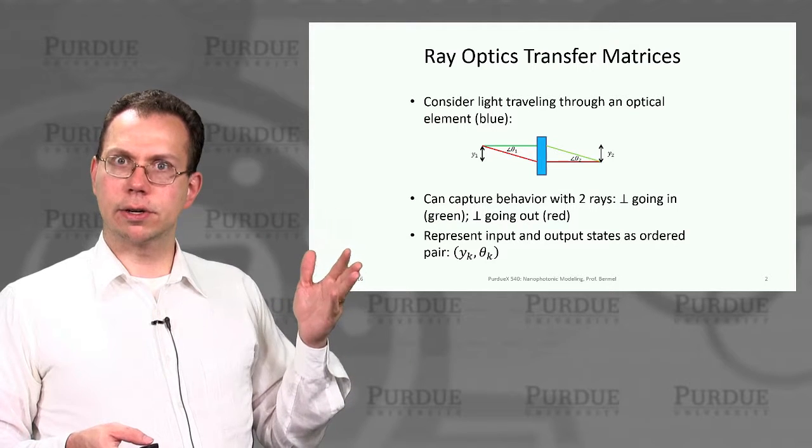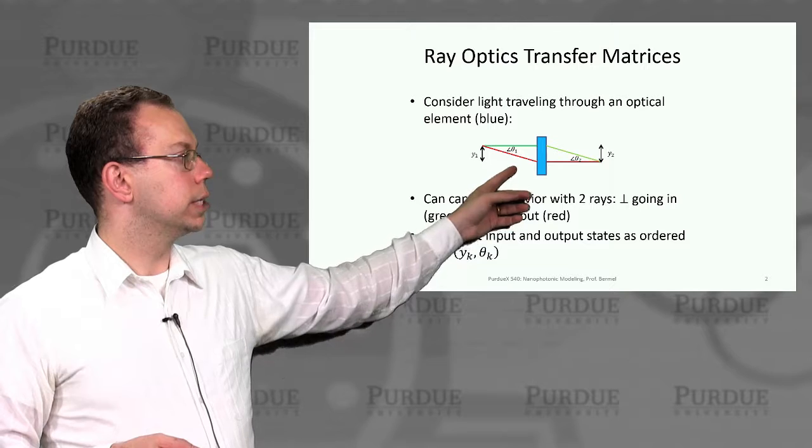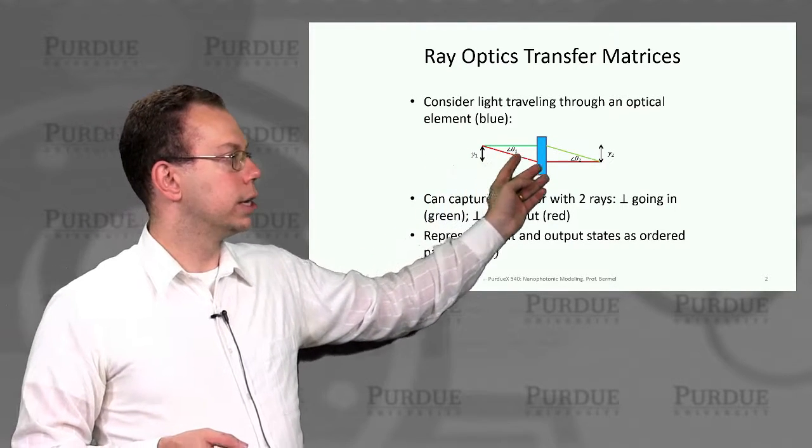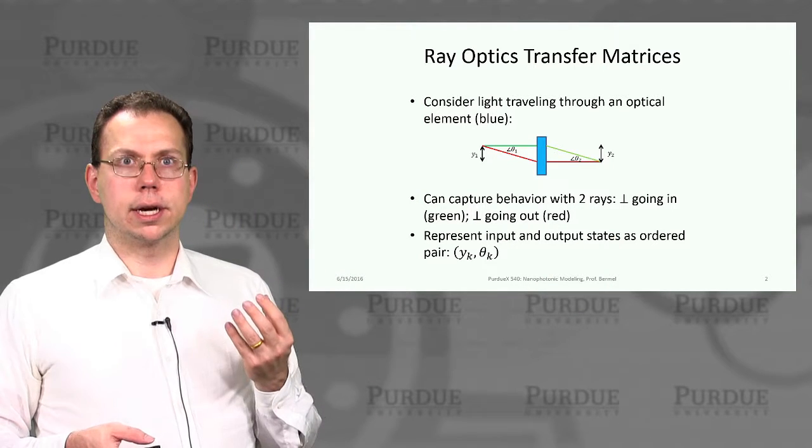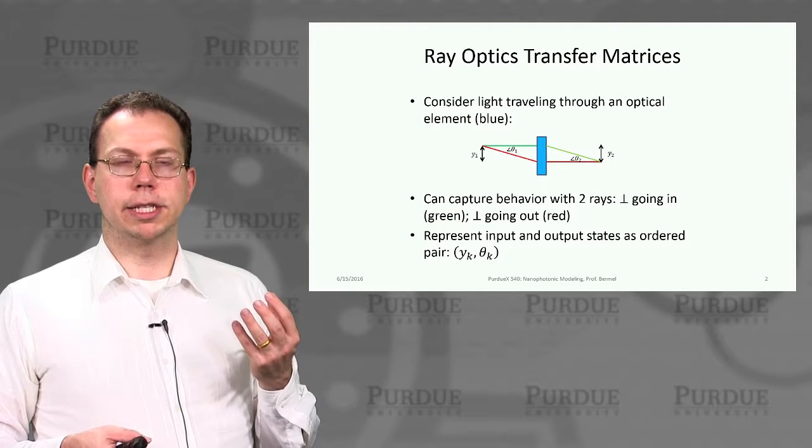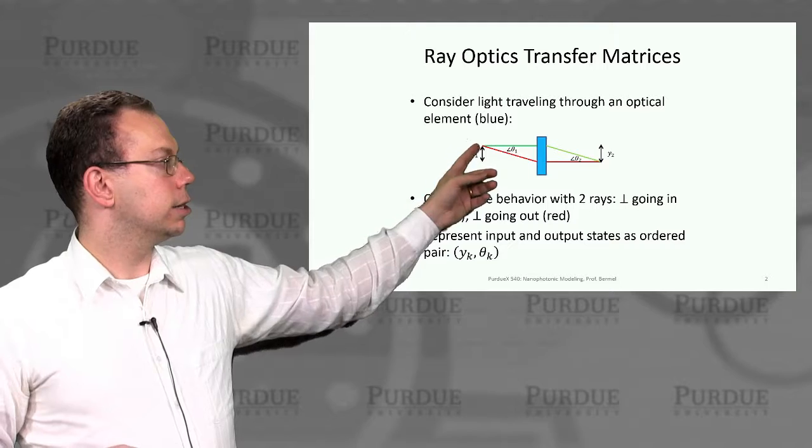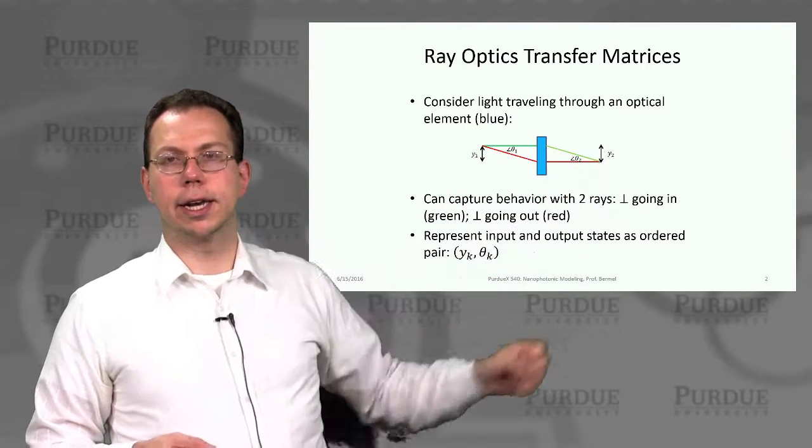Optical rays are passing through at a certain angle, theta 1, with respect to the optical axis which goes perpendicular to the optical elements. The ray optics calculation captures two sets of rays: one parallel to the optical axis before entering, then going at angle theta 2.